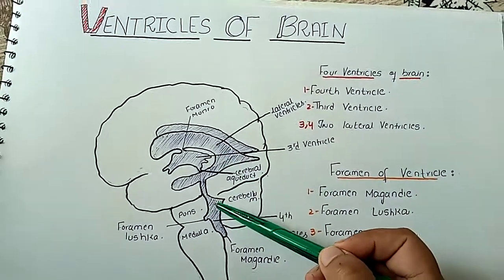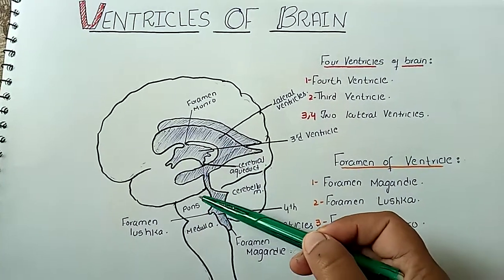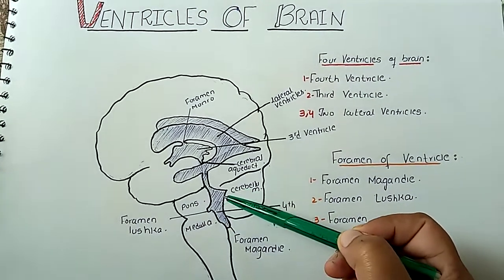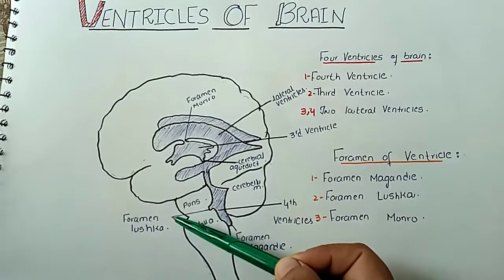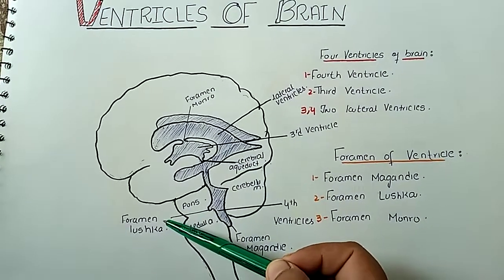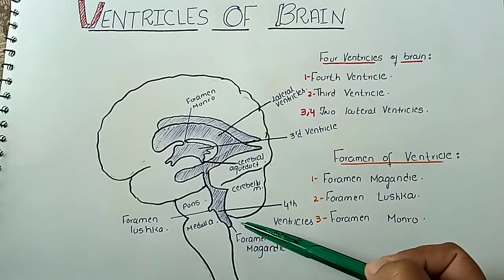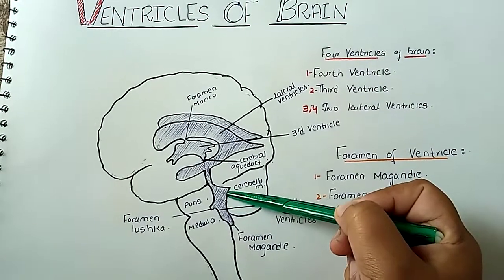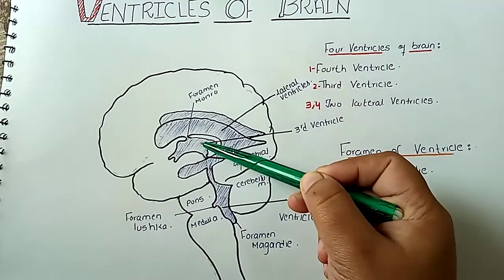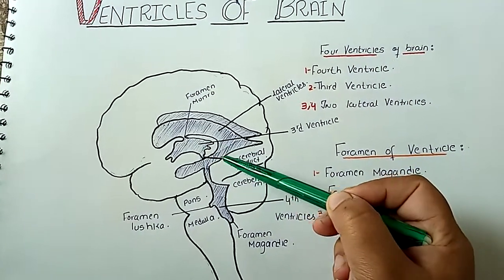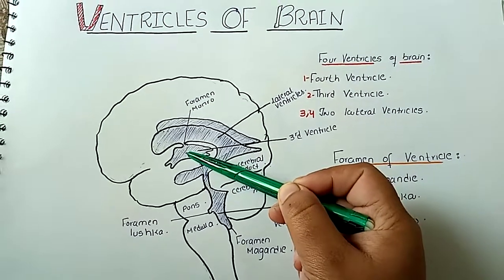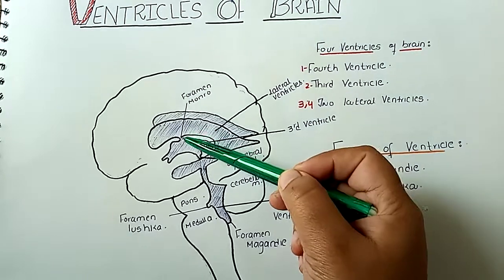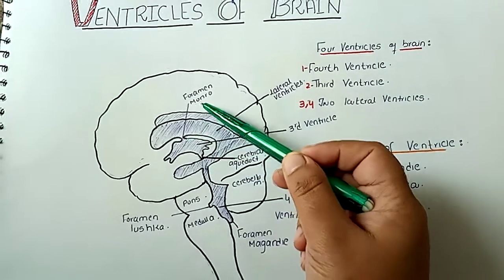The 4th ventricle is present posterior to the pons and the superior part of the medulla oblongata, and anterior to the cerebellum. There are 2 foramina in the 4th ventricle: foramen of Luschka and foramen of Magendie. The 4th ventricle is connected to the 3rd ventricle through the cerebral aqueduct, and the 3rd ventricle is connected to the lateral ventricles through the foramen of Monro, or the interventricular foramen.